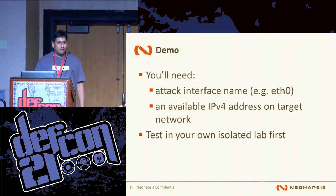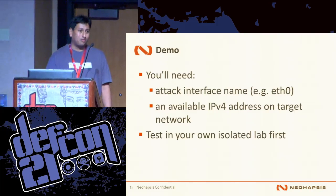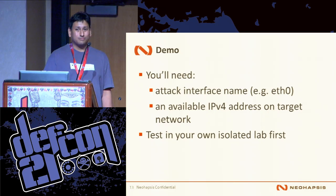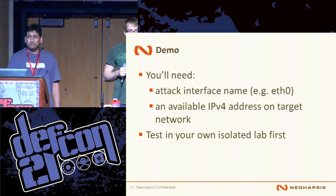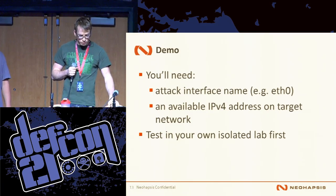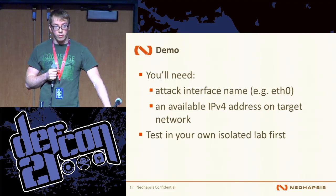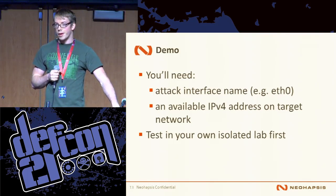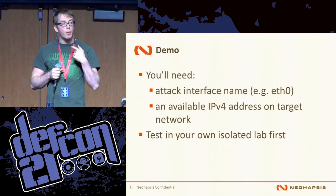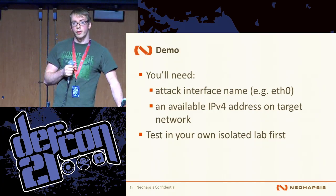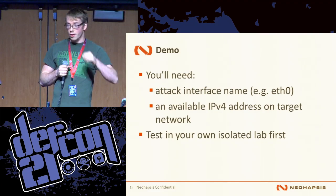Before you get started, you'll need to know the interface of your attacker host you want to run it on. You'll also need an extra IPv4 address on the network you're attacking to do NAT translation. You're going to want to test in your own isolated lab first — it is a relatively aggressive attack. You're basically going to route everything through your host, so if you imagine doing this on a flat network with 100, 200, or more hosts, you're routing a lot of traffic. This attack only works on a local network — you need to be on the same subnet as the victims.